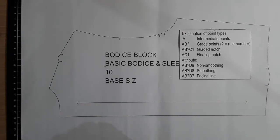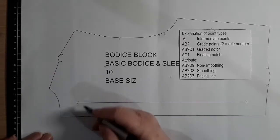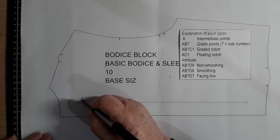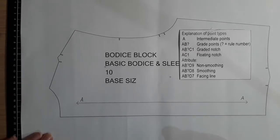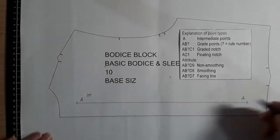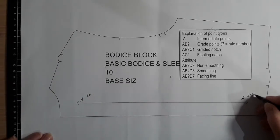Back bodice now. So digitizing the back bodice, first step is marking in our grain line. So A on the left side and A on the right side. This one is always the first point and this is the second point.